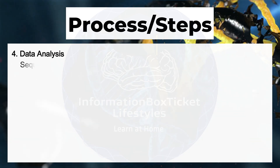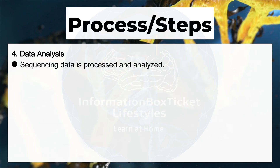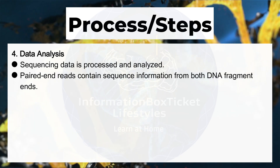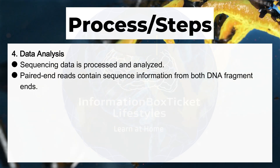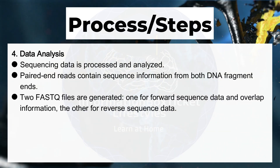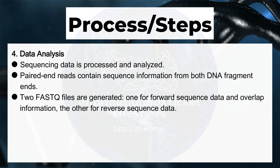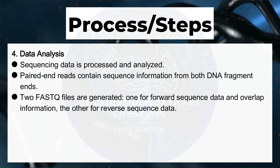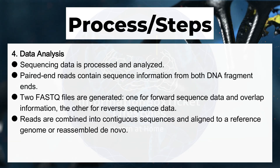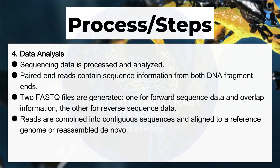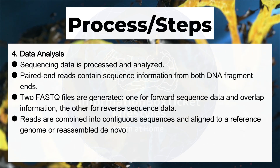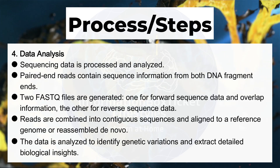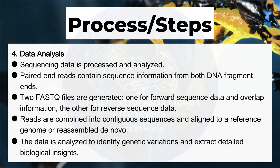Step four: data analysis. Sequencing data is processed and analyzed. Paired-end reads contain sequence information from both DNA fragment ends. Two FASTQ files are generated: one for forward sequence data and overlap information, and the other for reverse sequence data. Reads are combined into contiguous sequences and aligned to a reference genome or reassembled de novo. The data is analyzed to identify genetic variations and extract detailed biological insights.